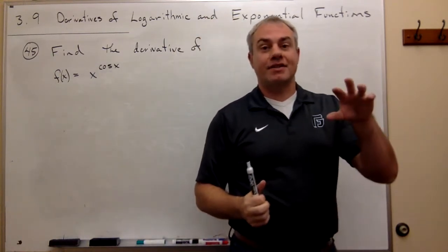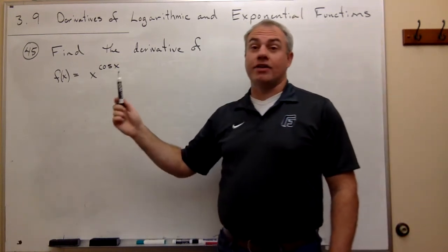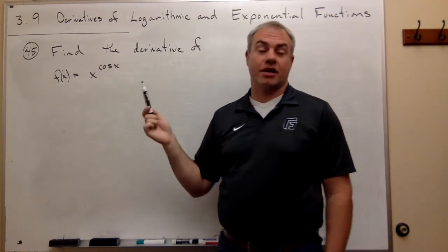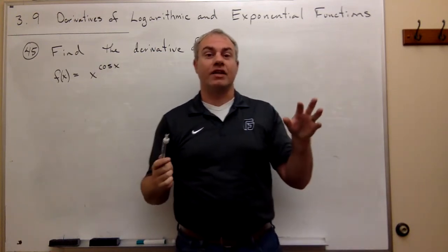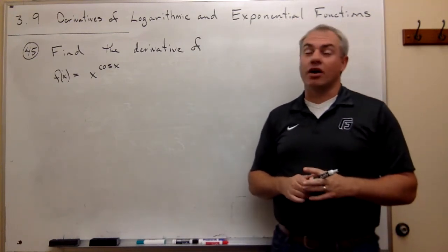If you have x's that are in the base, like an x here, and you have x's that are in the exponent as well, like a cosine of x here. So if you have x stuff in the base and you have x stuff in the exponential, it's pretty hard.